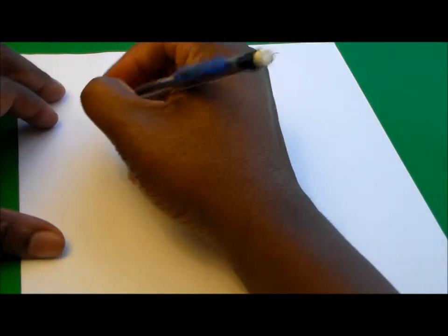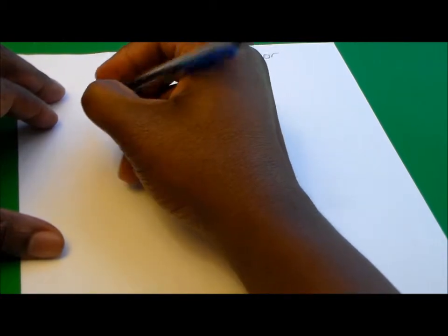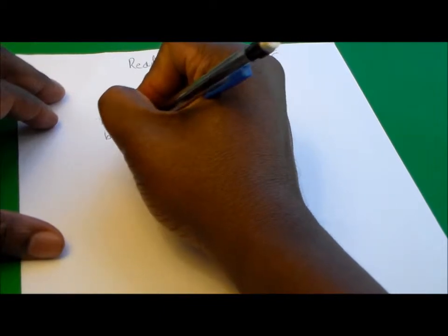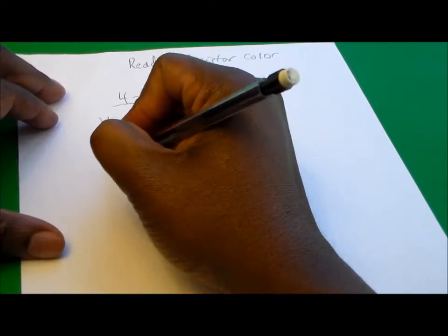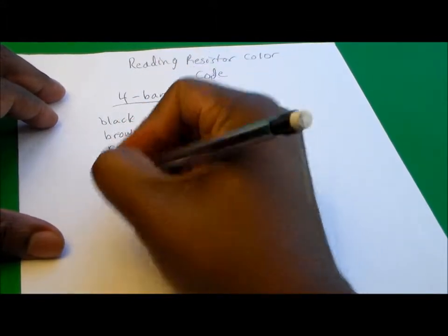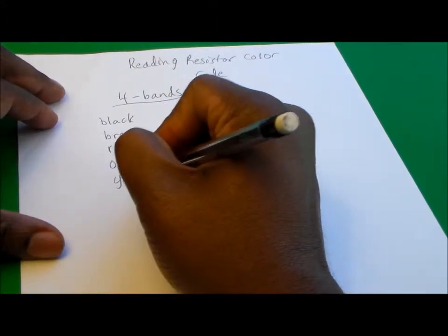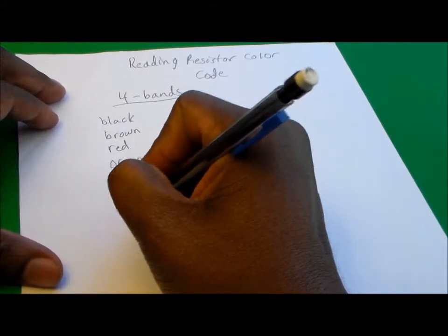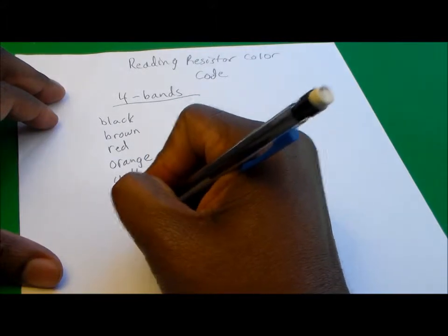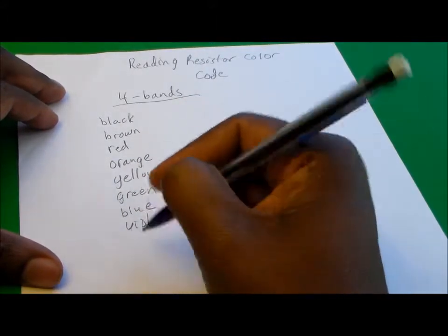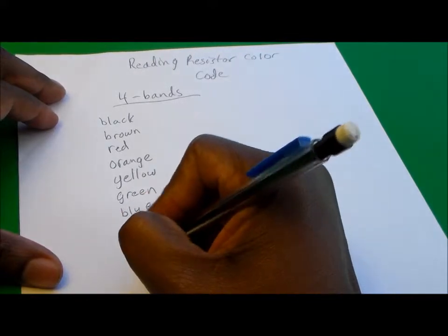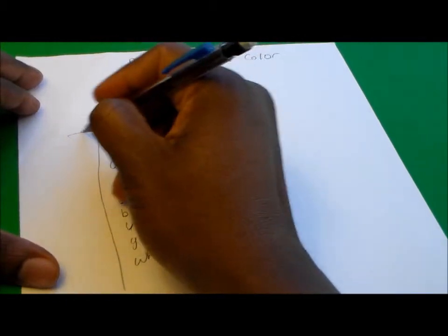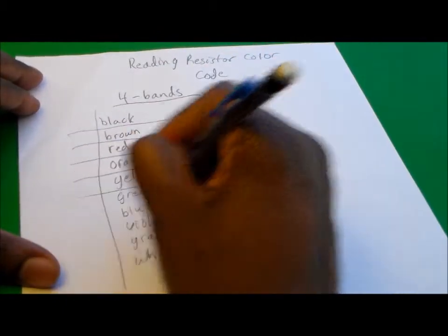Here are the colors that you may encounter: black, brown, red, orange, yellow, green, blue, violet, gray, and white. We're going to associate a number with each of these colors.